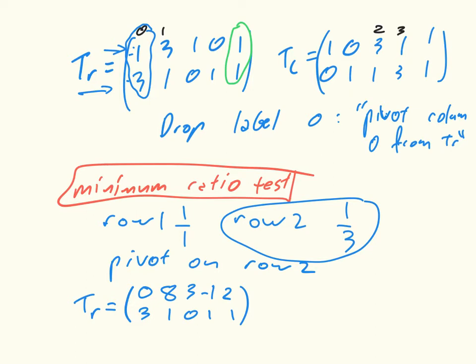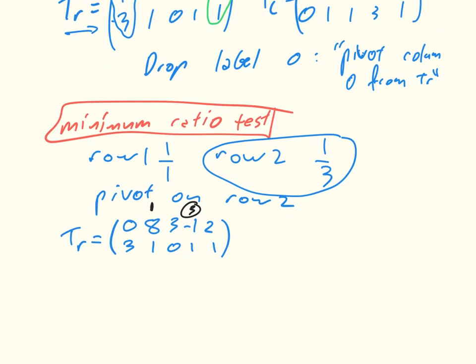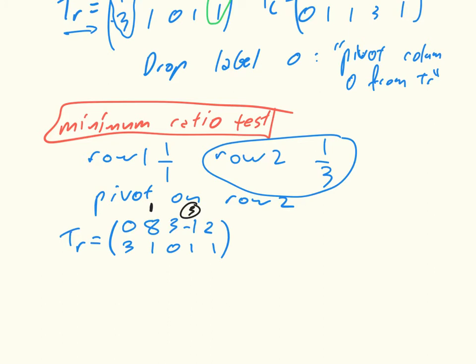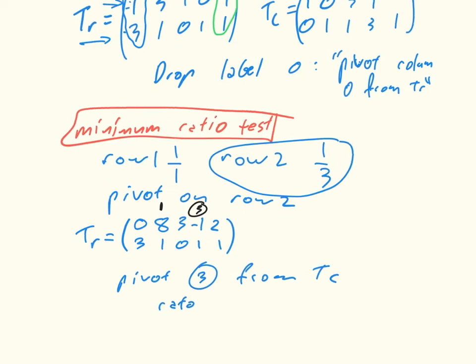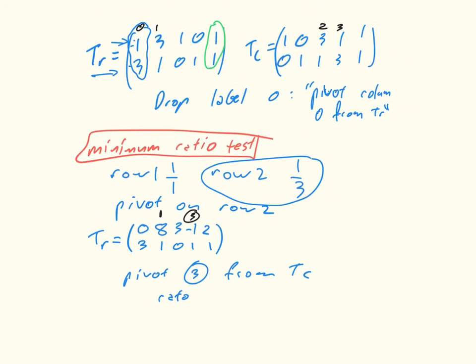And now the labels we now have are 1 and 3. 3 is the new one we picked up. So we need to pivot column 3, the fourth column, on Tc. So pivot 3 from Tc. The ratios, let me just get that back in. The ratio for the first row is 1 over 1, and for the second one is 1 over 3.